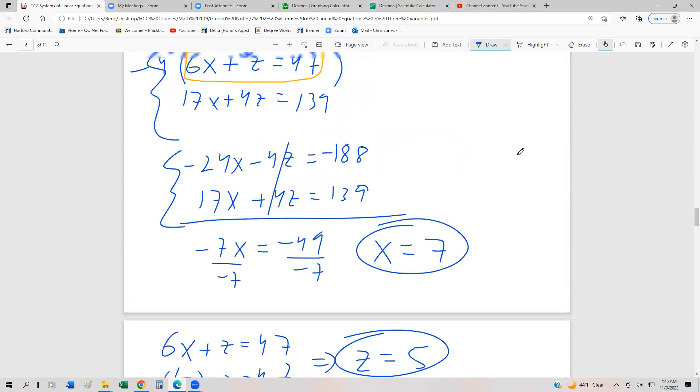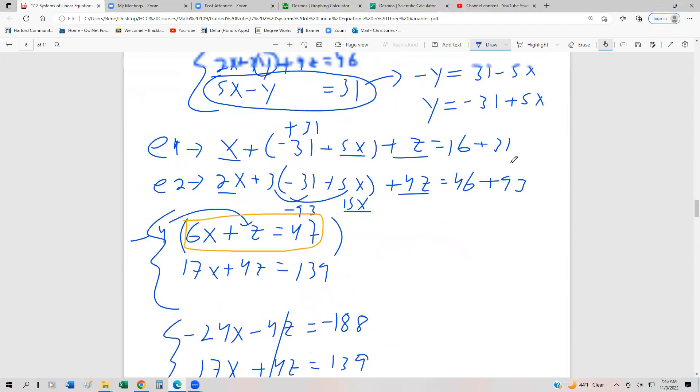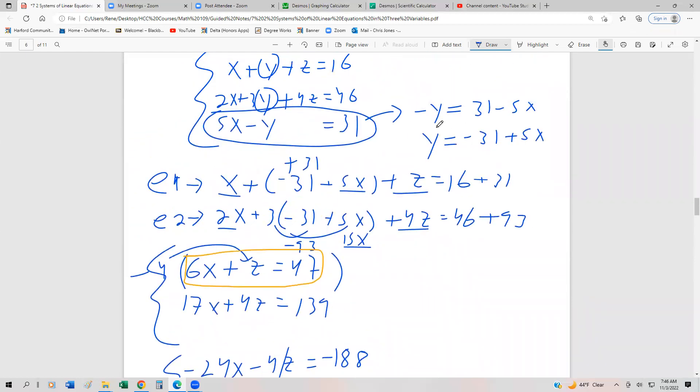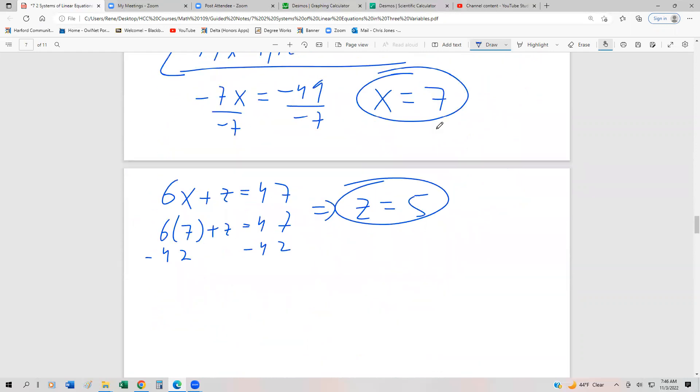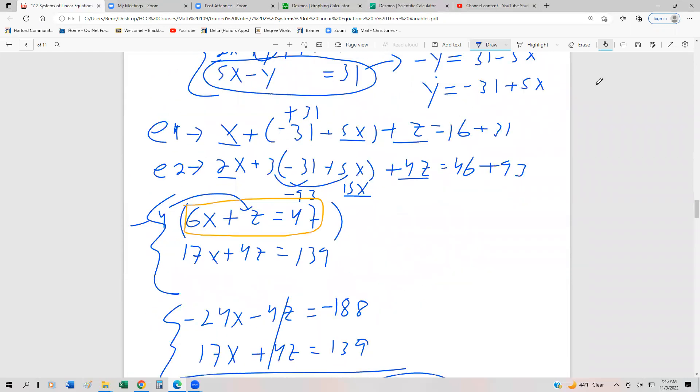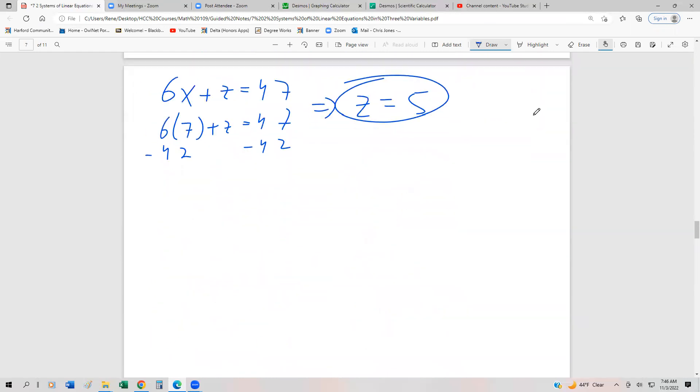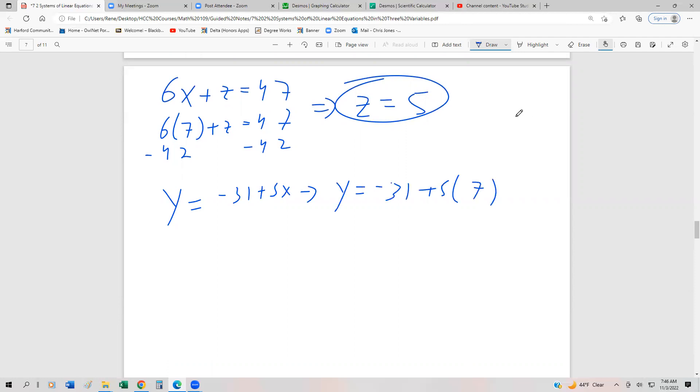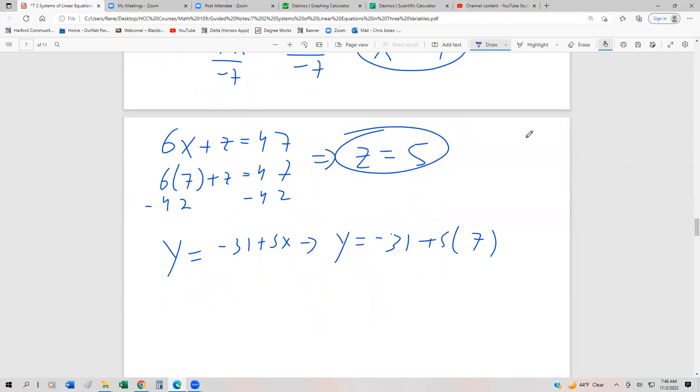Finally, we can go all the way back right here to get y. And so y, we have x and z. So remember, y was negative 31 plus 5x. So y equals negative 31 plus 5 times 7. Negative 31 and 35 is going to be 4. So our ordered triple is going to be 7, 4, 5.